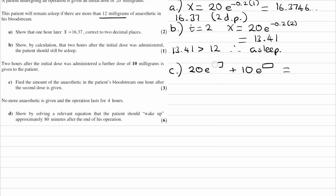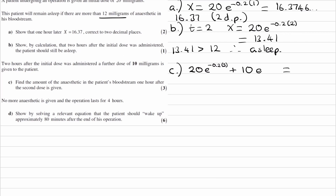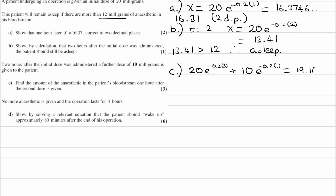The first dose of 20 mg has been in the patient for three hours: you administer the first dose, two hours later the second dose is given, then we're looking one hour after that. So the first dose has been in for three hours, and the second dose has been in for one hour. We add these two things up and end up with 19.16 to two decimal places.